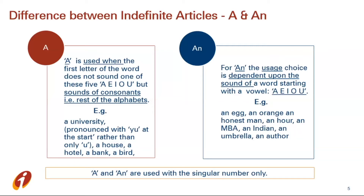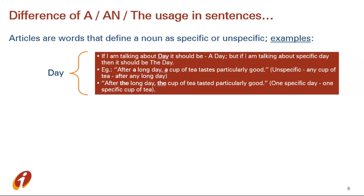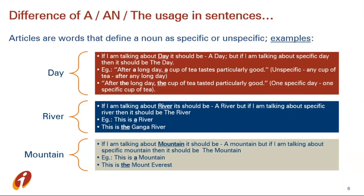Now let's see some examples of differences between 'a/an' and 'the'. You can find more examples in books, magazines, or on the internet — just pause the video. For example: when we talk about day in general it should be 'a day'; when we talk about a specific day it should be 'the day'. Example: 'After the long day, the cup of tea tasted particularly good.' When we talk about a river in general it should be 'a river'; for a specific river, 'the river'. For a mountain in general it's 'a mountain'; for a specific one like Mount Everest, it's 'the Mount Everest'.